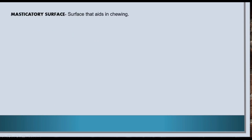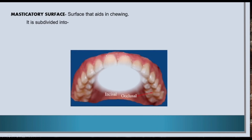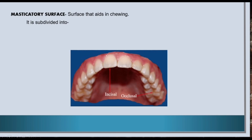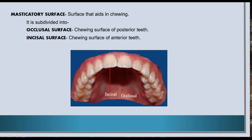Now let us know about the masticatory surface. Masticatory surface is the surface that aids in chewing. It is subdivided into occlusal and incisal surface. Occlusal surface is the chewing surface of posterior teeth, whereas incisal surface is the chewing surface of anterior teeth.